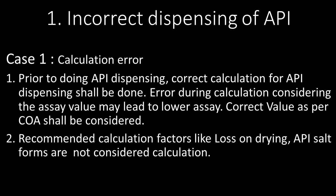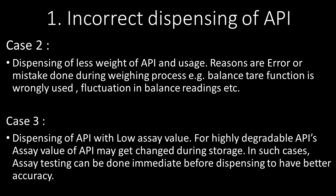The second reason for calculation error is that recommended calculation factors like loss on drying and API salt forms are not considered during calculation. The second case under incorrect dispensing of API is dispensing of less weight of API and its usage in batch processing. Reasons include errors or mistakes during the weighing process, e.g., the balance tare function is wrongly used or there is fluctuation in balance readings.